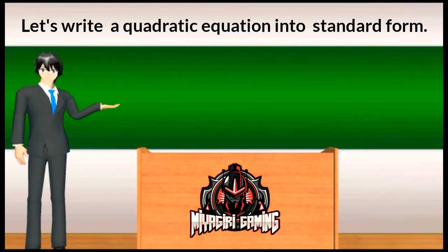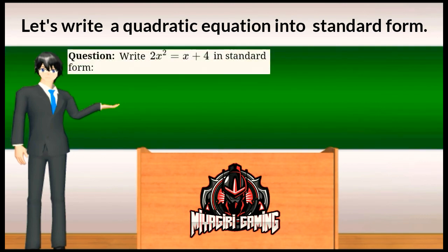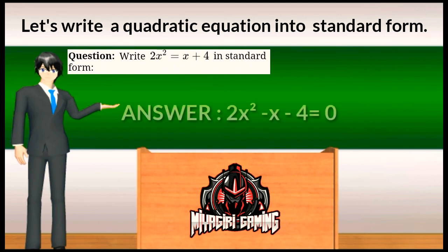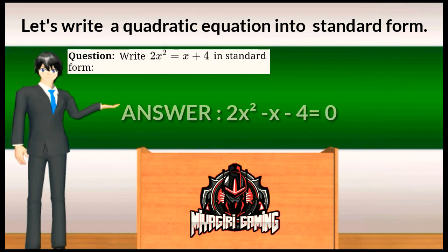Let's write a quadratic equation into standard form. Question number 1: write 2x squared equals x plus 4 into standard form. We need to transfer the given numbers to get b and c. The standard form of question number 1 is 2x squared minus x minus 4 is equal to 0.